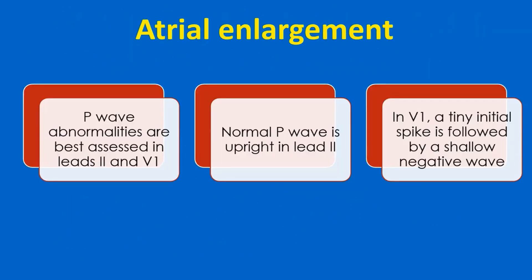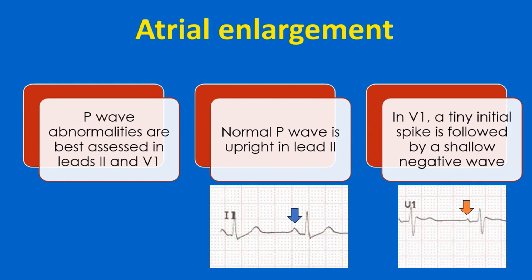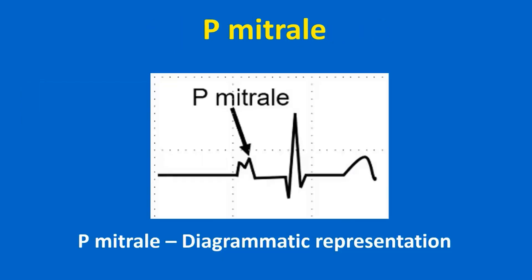P wave abnormalities are best assessed in leads 2 and V1. Normal P wave is upright in lead 2. In V1, a tiny initial spike is followed by a shallow negative wave.